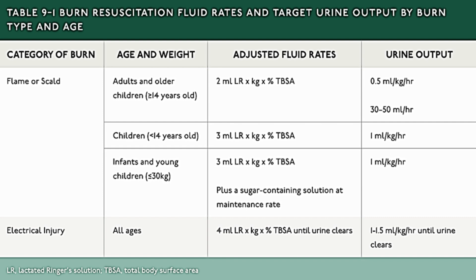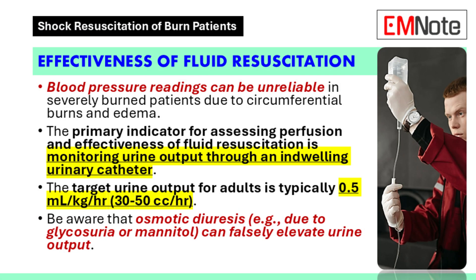For infants and young children weighing 30 kg or less with flame or scald burns, we still use 3 mL of lactated Ringer's per kilogram per percentage TBSA burned, but we also add a sugar-containing solution at the maintenance rate. Target urine output is 1 mL/kg/hour. For electrical injuries across all ages, we use 4 mL of lactated Ringer's per kilogram per percentage TBSA burned, running until urine clears, with a target urine output of 1 to 1.5 mL/kg/hour until clear.